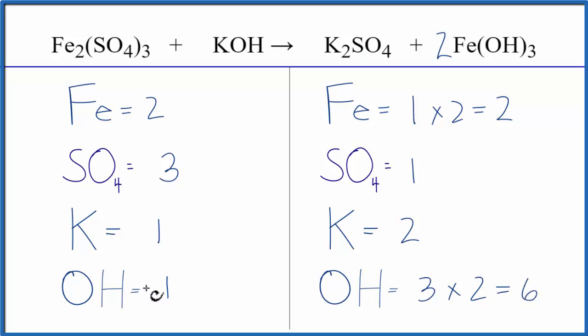Let's balance the hydroxides next. We put a six in front of the KOH, so now we have one hydroxide times six, so we have six of those. Those are balanced, but we have one times six, we have six potassium atoms.